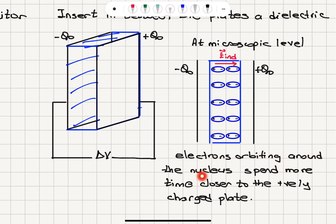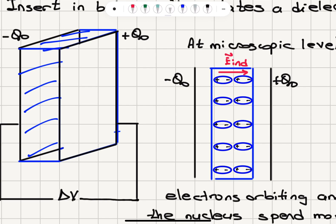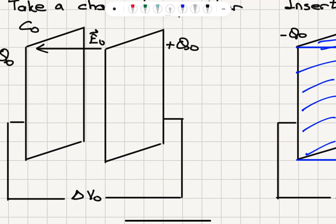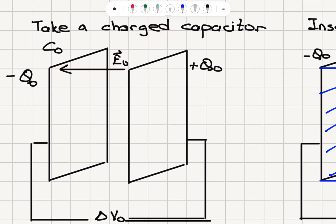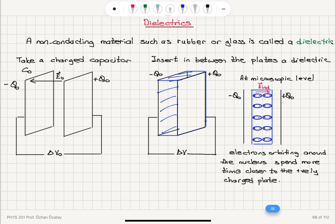Electrons orbiting around the nucleus spend more time closer to the positively charged plate because they feel the Coulomb attraction towards that plate. We will see an induced electric field inside the material pointing from left to right. The outside electric field was from right to left, and now we have an induced electric field from left to right.